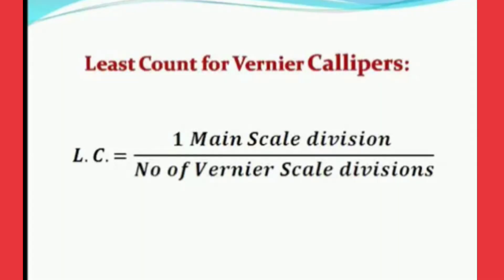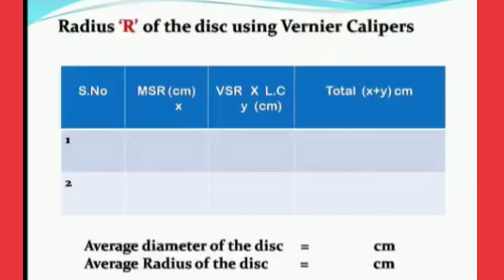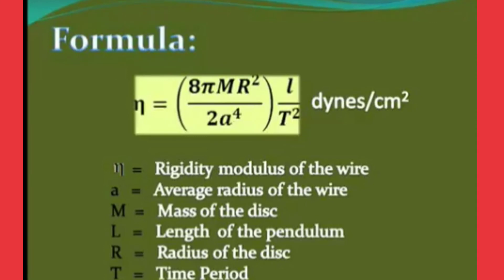From the tabular form we need to calculate the radius of disc and substitute them in the given formula, that is rigidity modulus formula: eta equals to 8π a^4 L by T^2. From that formula, finally we will get the answer.